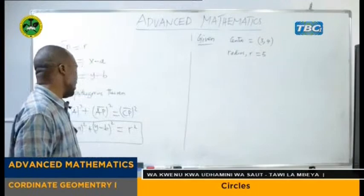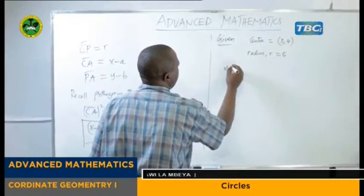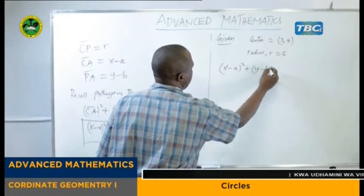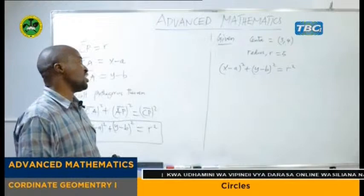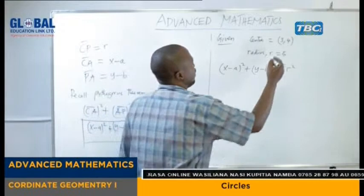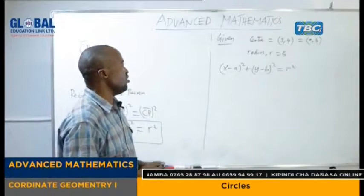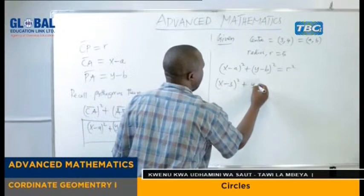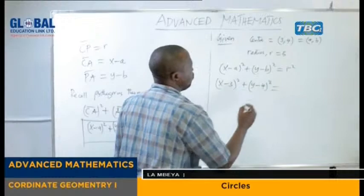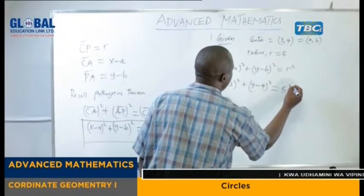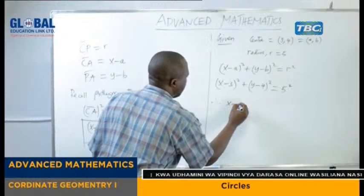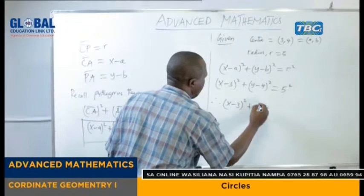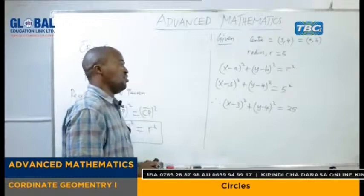Remember the general equation is (x minus A) squared plus (y minus B) squared is equal to R squared. So we can substitute our coordinate, referring to values of A and B. We are going to have (x minus 3) squared plus (y minus 4) squared is equal to 5 squared. So in this case this is the same as (x minus 3) squared plus (y minus 4) squared which is equal to 25. That is the equation of the circle whose center is (3, 4) and the radius is equal to 5.